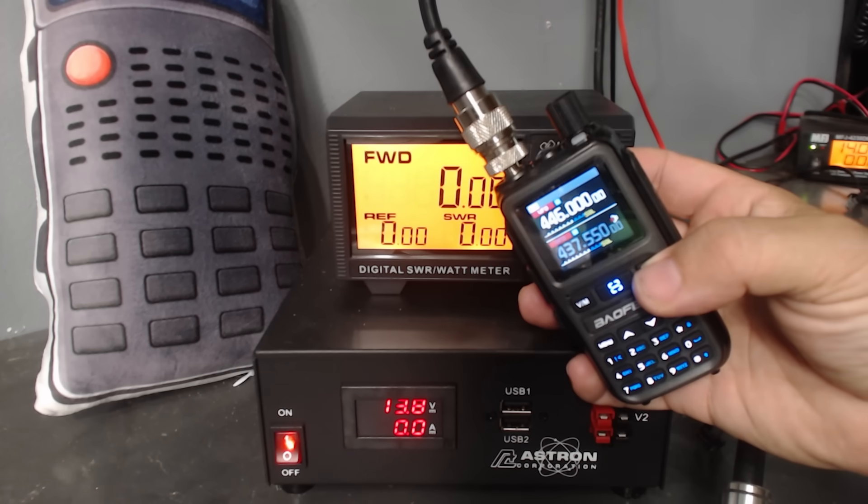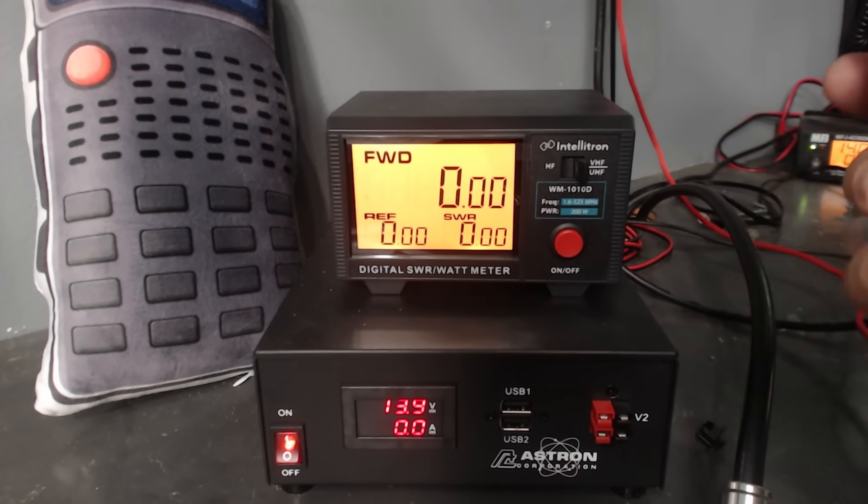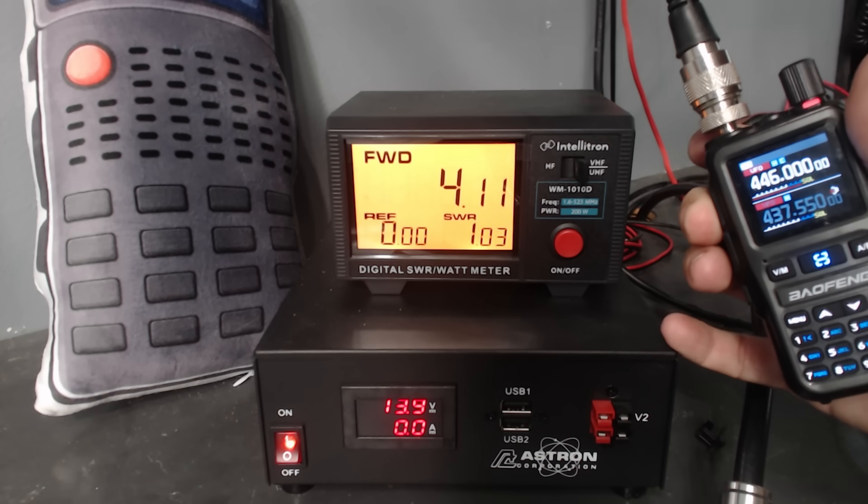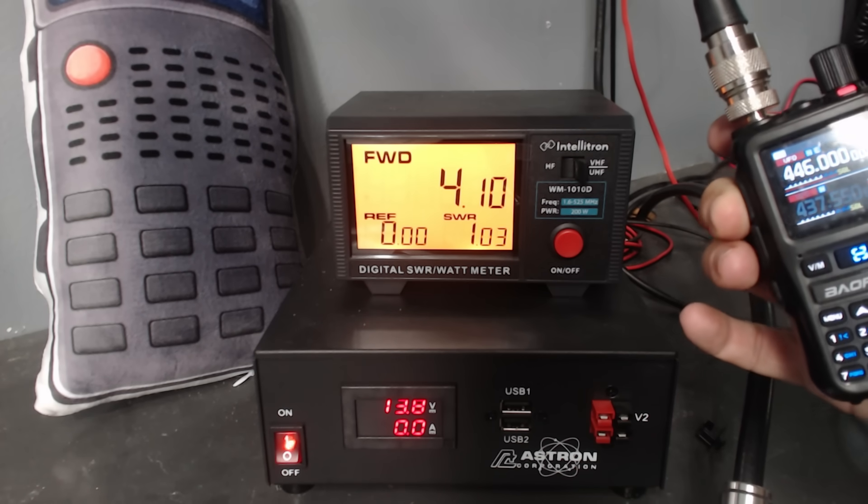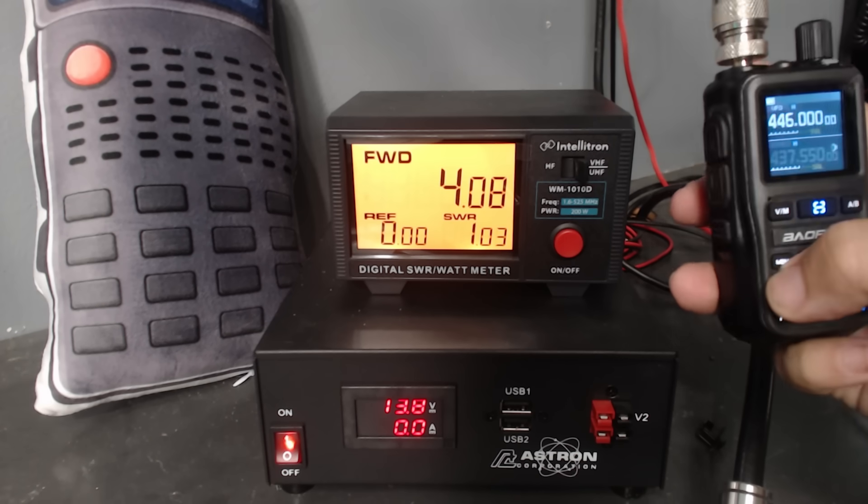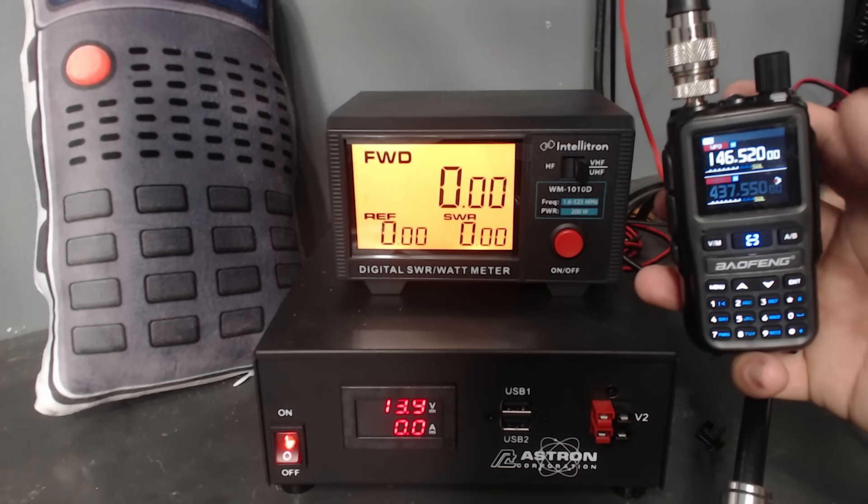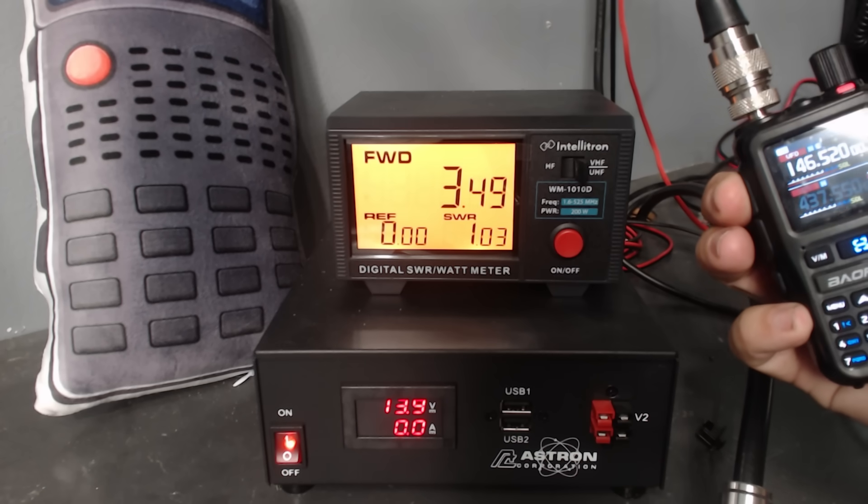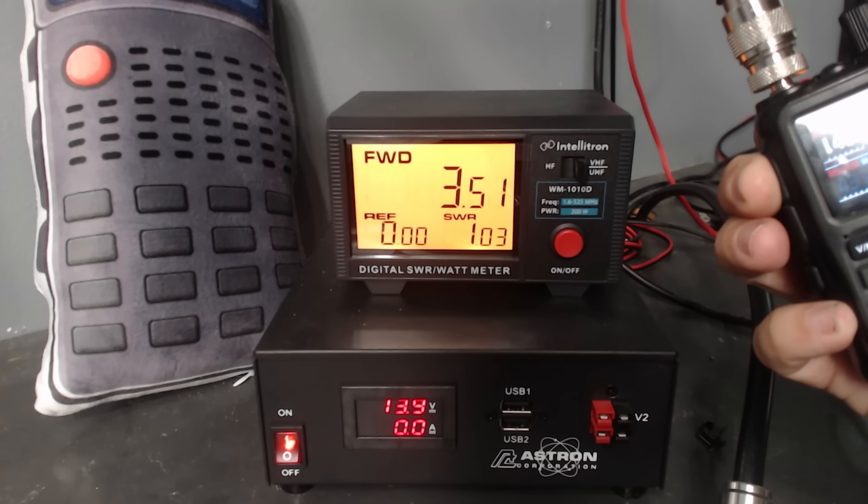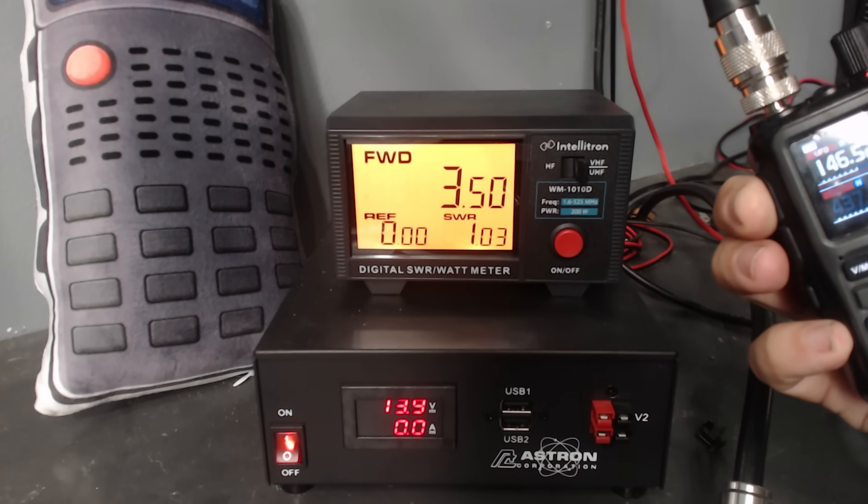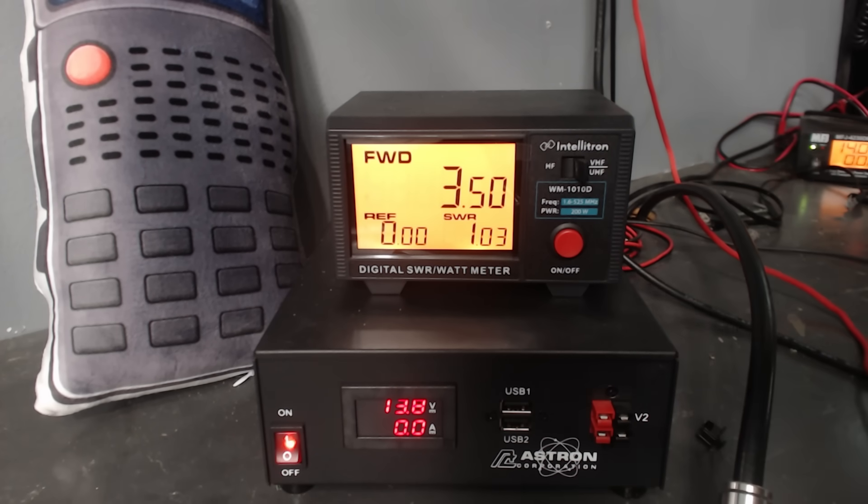All right. We were already on the 440 band, so we're going to stay on 446.0. And we're going to key this up here. So 4 watts on 440 on high power. We'll go back to the 2 meter band there and key that up. And 3.5 watts. So 3.5 watts on high power on 2 meters, and about 4 watts on high power on 440.